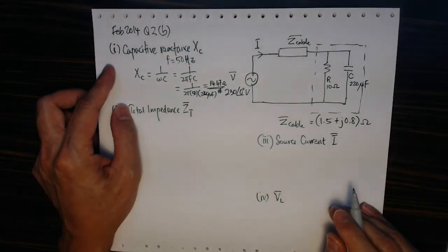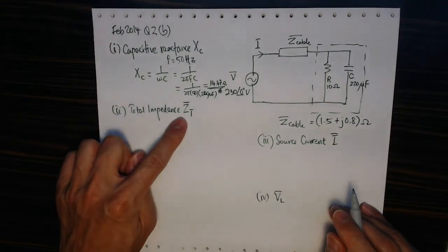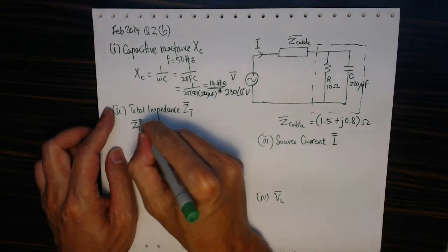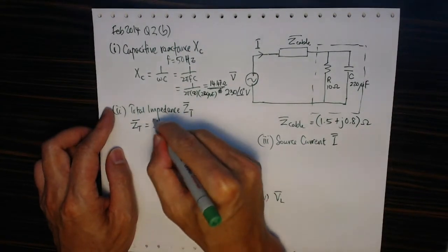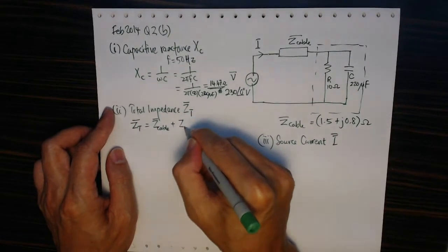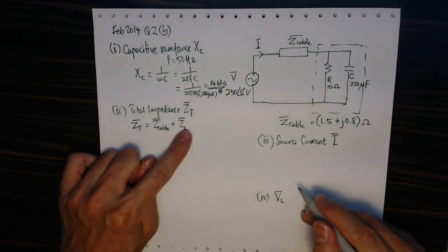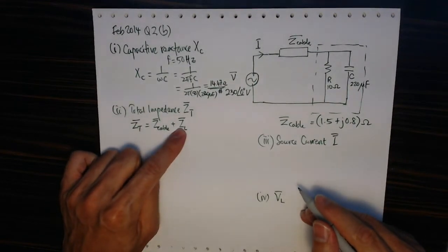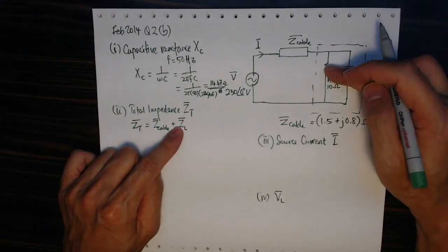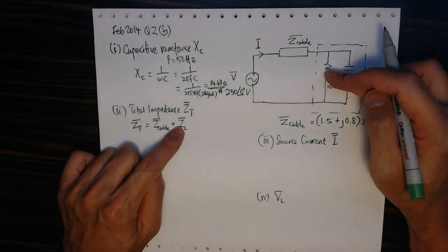So that's the answer for part 1. Now for part 2 we want to calculate the total impedance. The total impedance comprises of two parts: the impedance due to the cable plus the impedance of the load. Before we can calculate the total impedance we need to calculate the impedance of the load.